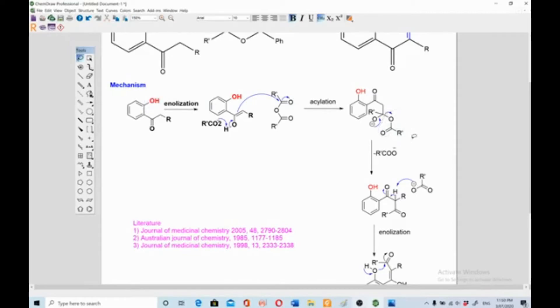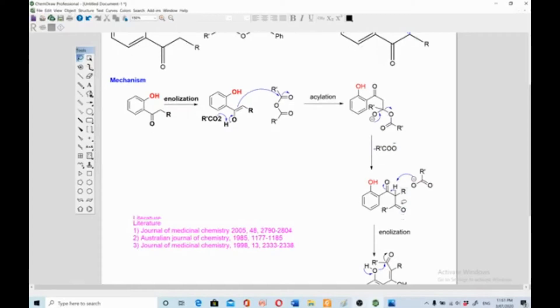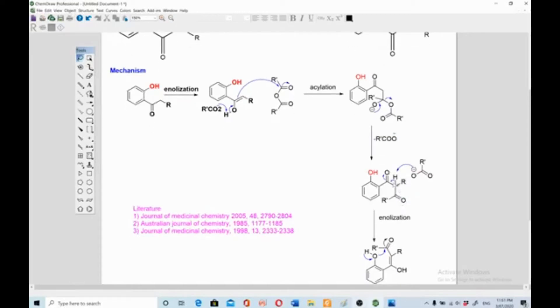Next, this negative charge goes back to make a carbon double bond oxygen and this acyl group leaves. This is a migration or leaving group, the acyl group in this case. Now you have made the ketone functional group, another one. Now you have a one, two, three diketone functional groups.